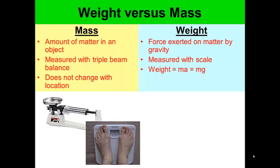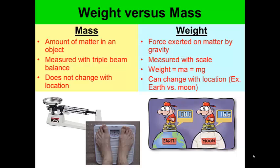Weight can change with location. For example, you weigh less on the moon than you do on Earth. This guy weighs 100 kilograms on Earth but only 16.6 kilograms on the moon. That's the difference between mass and weight.